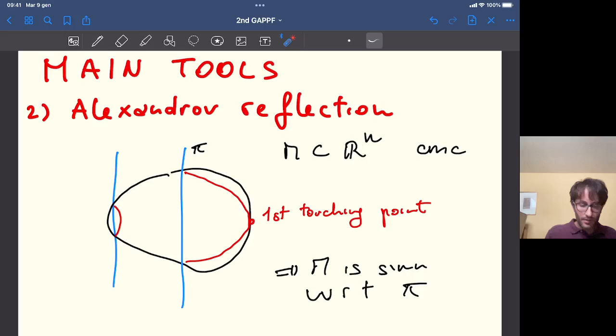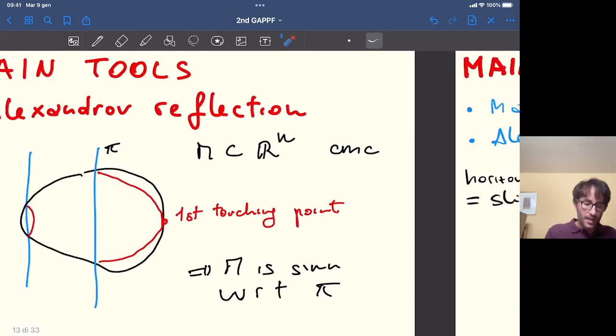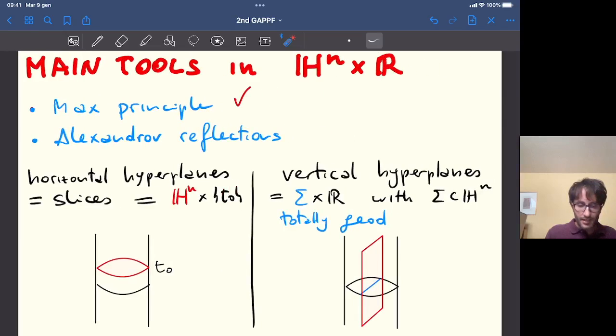Coming back here, looking at what we did with hyperplanes in R^n, we realize that the hyperplane in a Riemannian manifold should be a hypersurface such that the reflection across the hypersurface is an isometry of the ambient manifold. This in particular implies that the hypersurface is totally geodesic.